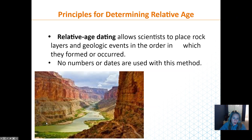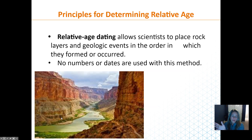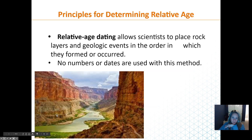Looking at relative age dating: in this picture, the bottom layer is older than the top. We can see these layers are horizontal — not tilted — so we know the oldest layers are on the bottom because they had to be there first for other layers to be laid on top. If you sprinkle sand, it lays down horizontally, maybe wavy, but horizontal.